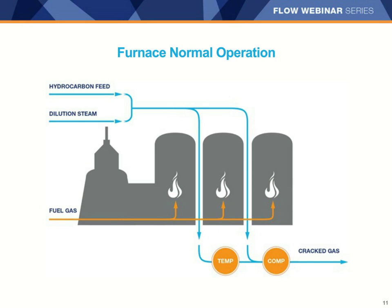There are essentially four process streams in the furnace section during normal operation. Those are the three feeds: fuel gas for combustion mixed with air, the hydrocarbon feed which is typically naphtha or ethane, and the dilution steam. There is also cracked gas coming out of the furnace. There are two primary variables controlled for optimization: the temperature of the cracked gas, typically called the coil outlet temperature or COT, and the composition of the cracked gas. During normal operation, the goal is to optimize the yield to produce the highest value of products and to minimize the coking rate.